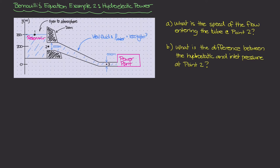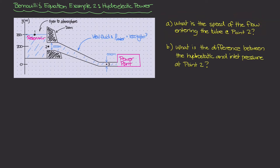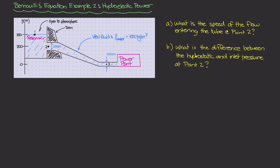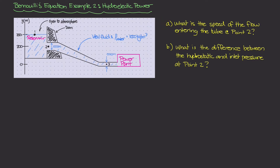There are two sub-questions. In this video, we're looking at the first: what is the speed of the flow entering the tube at point two — that is, the flow velocity of water at the intake pipe? In the second video, we'll look at the difference between the hydrostatic and inlet pressure at point two. For now, we focus only on part a.